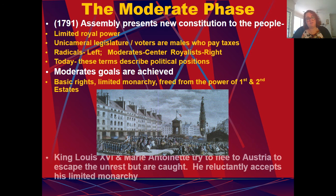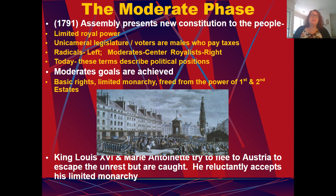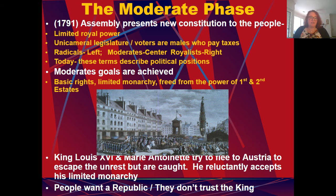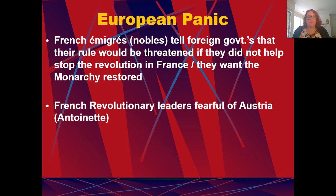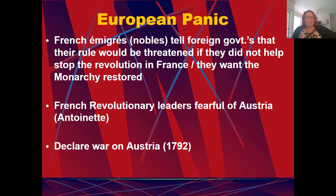Louis XVI and Marie Antoinette try to flee to Austria to escape the growing unrest, but they were caught, and he reluctantly accepts his limited monarchy. The people ultimately want a republic because they don't trust the king. Panic erupts throughout all of Europe because French nobles tell foreign governments that their rule would be threatened if they did not help stop the French Revolution — they wanted the monarchy restored. French revolutionary leaders were particularly fearful of Austria because of Marie Antoinette, and they ended up declaring war on Austria.